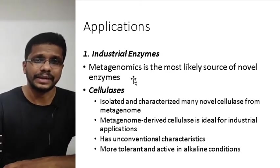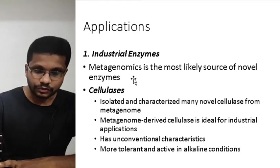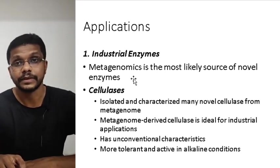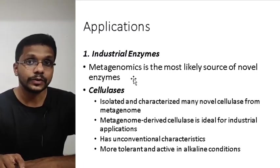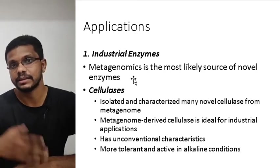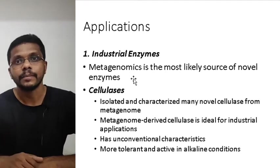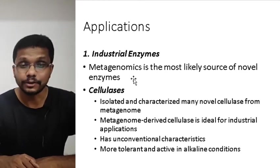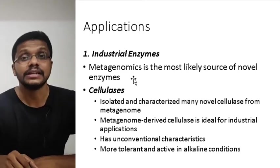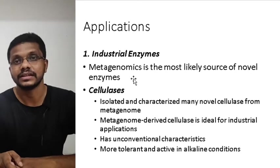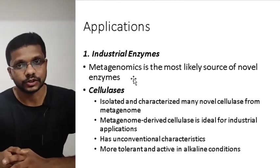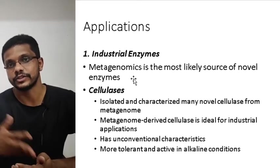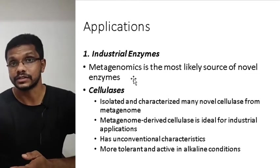Metagenomics is a comparatively new technique with wide applications. One major application is the production of industrial enzymes, which have great importance in many industries. Using metagenomics, we can screen for a particular enzyme without culturing the microorganism, similar to primary and secondary screening in bioprocess technology. Using this technique, many novel enzymes have been found — for example, cellulase, which is of special interest because cellulose is one of the most abundant polysaccharides on Earth, composed of glucose.